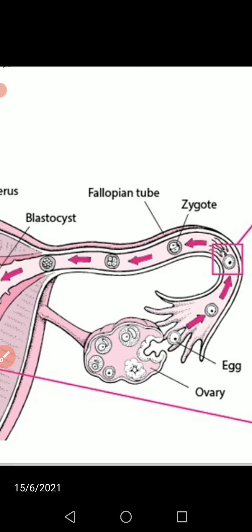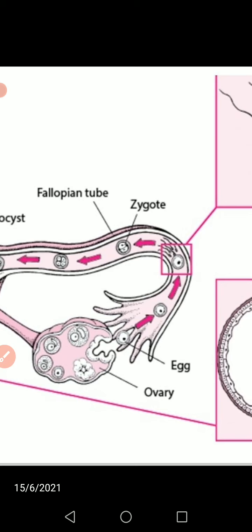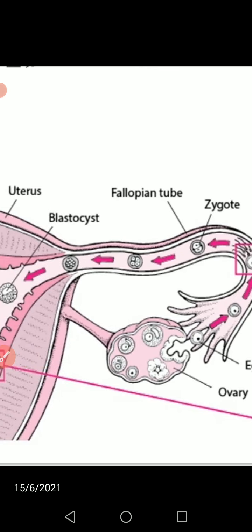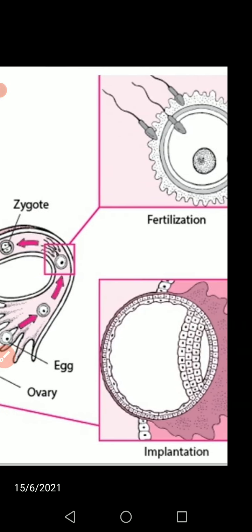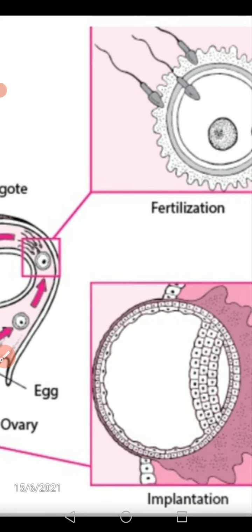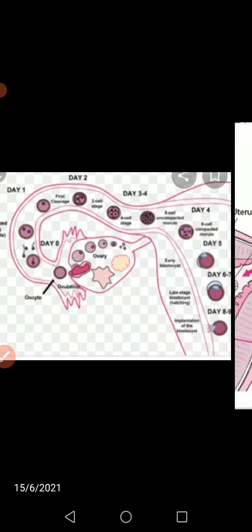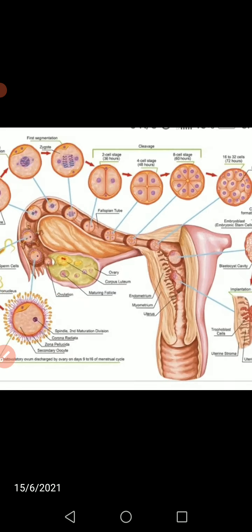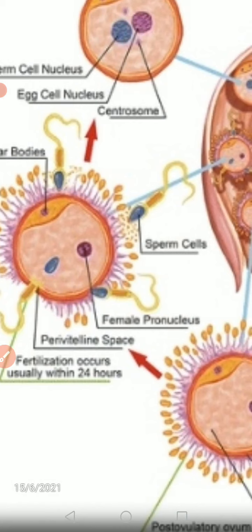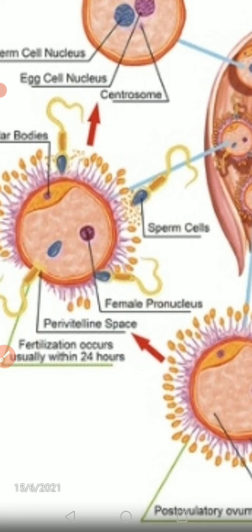Before a sperm can enter the egg, it must penetrate the multiple layers of granulosa cells surrounding the ovum, forming the corona radiata. The sperms are seen trying to fuse with the egg, and three layers are present around the female ovum. The follicle cells are held together by an adhesive cementing substance called hyaluronic acid.